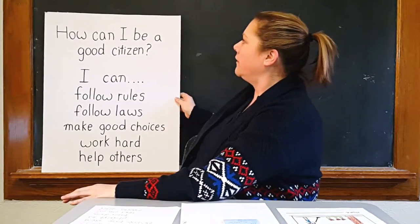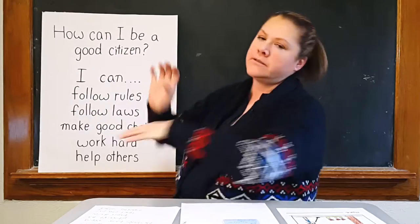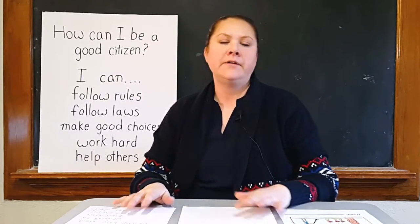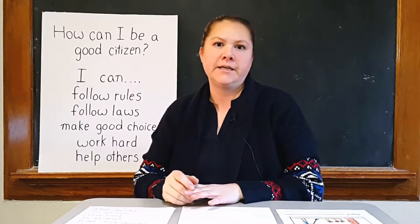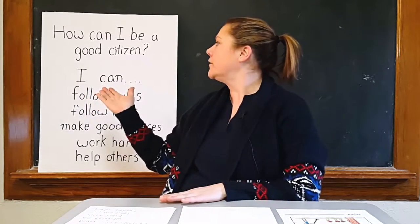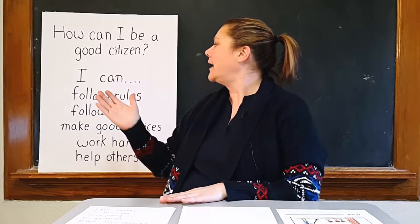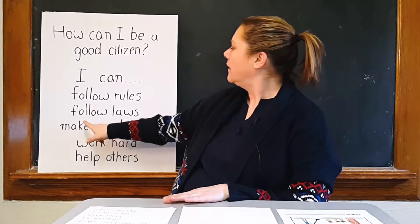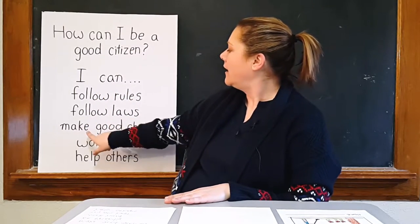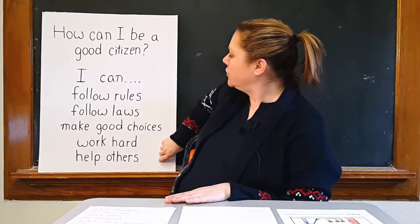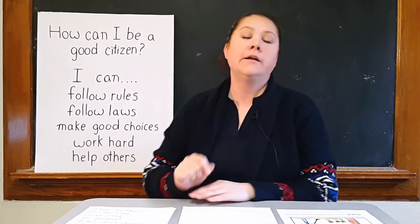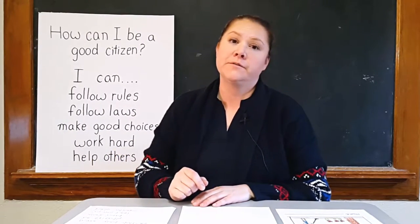We write it up on the board — how can I be a good citizen — and then we're having the discussion with the kids and we're adding things to our list like: I can follow rules, I can follow the laws, I can make good choices, I can work hard, and I can help others.